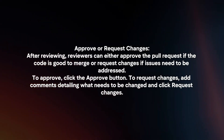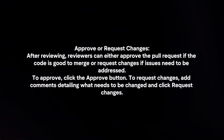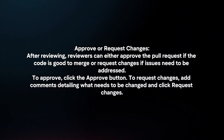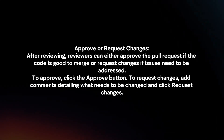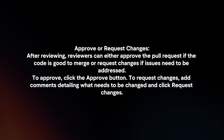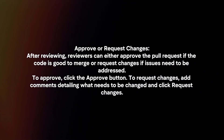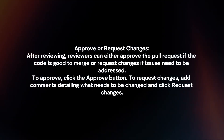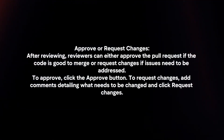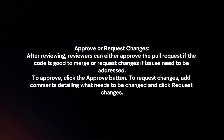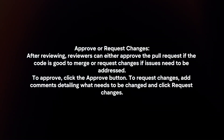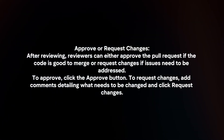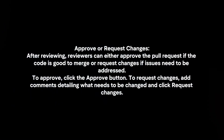Approve or request changes. After reviewing, reviewers can either approve the pull request if the code is good to merge, or request changes if issues need to be addressed. To approve, click the Approve button. To request changes, add comments detailing what needs to be changed and click Request Changes.